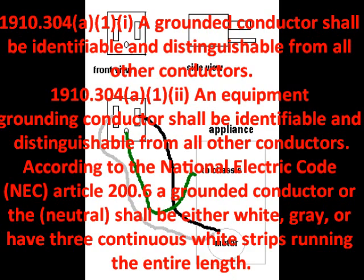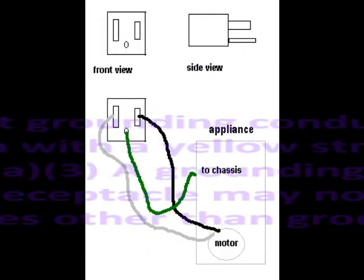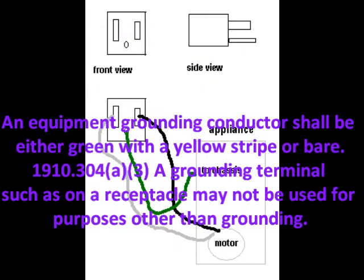An equipment grounding conductor shall be either green, a yellow stripe, or bare. A grounding terminal, such as on a receptacle, may not be used for purposes other than grounding.